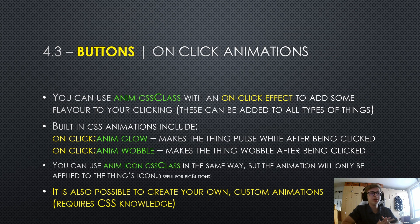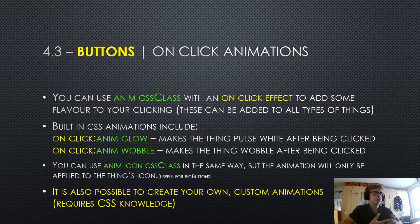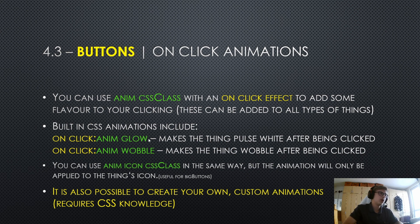On-click animations actually aren't specific to buttons — they can be used on every single type of thing in your game. I still wanted to mention them since they are used with the on-click property, or effect, sorry. You can use the anim CSS class with an on-click effect to add some flavor to your clicking. Built-in CSS animations in IGM include on-click anim glow, which makes the thing pulse white after being clicked, and on-click anim wobble, which makes the thing wobble after being clicked.